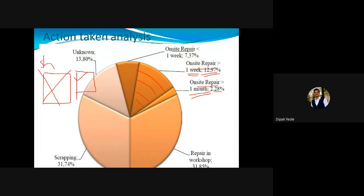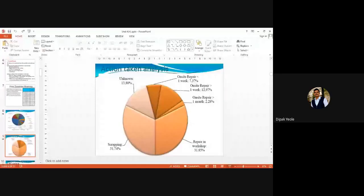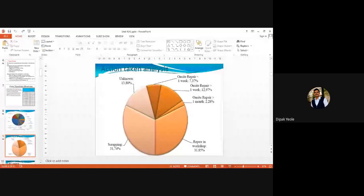If no parallel arrangement is available, the total substation may go into shutdown. This is illustrated by the recent news about Pune and Mumbai experiencing a power shutdown due to overload conditions. If a particular feeder fails, the total switchyard shuts down, and the affected region can also lose power.